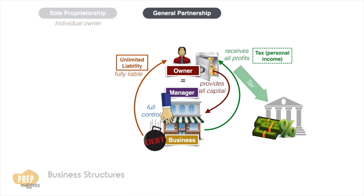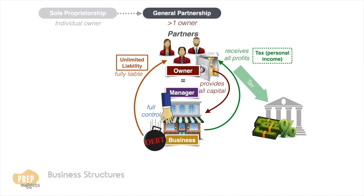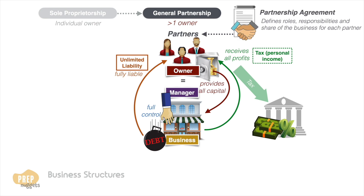A general partnership is like a sole proprietorship, just that it has two or more owners called partners. The roles, responsibilities, and share of the business of each partner are specified in the partnership agreement. The owners have shared control of the business operations and have unlimited shared liability for claims against the business. Likewise, the partners share all the profits, and the profits they individually receive are taxed as personal income.